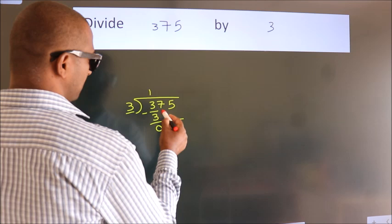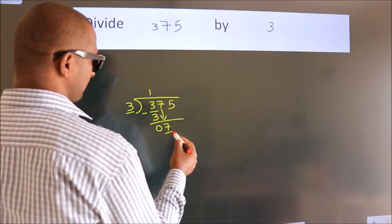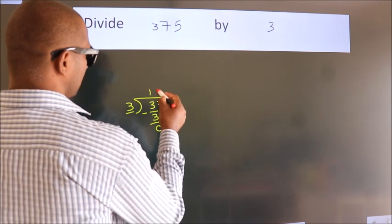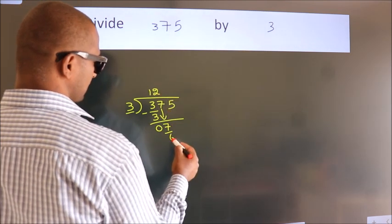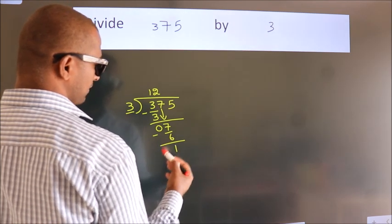After this, bring down the beside number. So, 7 down. So, 7. A number close to 7 in 3 table is 3 2s, 6. Now, we subtract. We get 1.